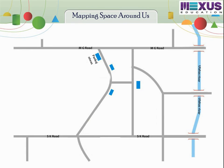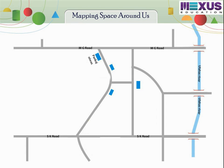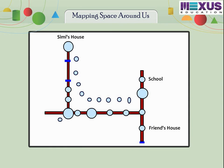We use maps since we were in primary class. We use maps to find a particular location, rivers, mountains, etc. Here is a map drawn by Simi. In this map, the route from her house to a friend's house is shown. Can you find out how far is Simi's house from a friend's house? It is very difficult to answer the above questions on the basis of the given map, as we do not know if the distance is between the circles. There is no proper information in this map.